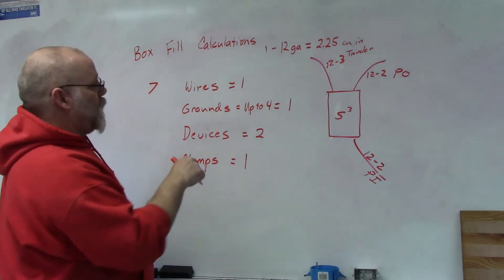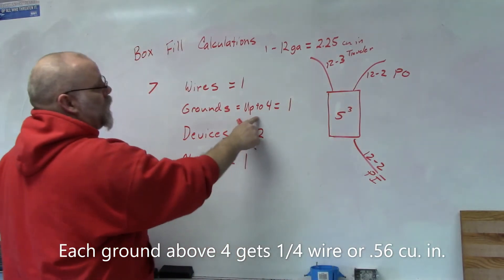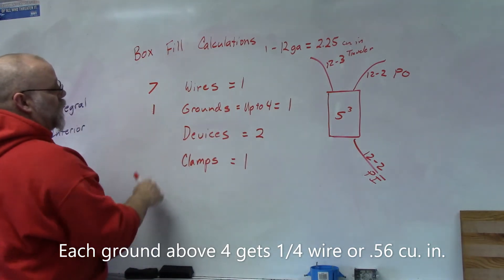Now we count the grounds. Up to four. So there's one ground, two, three grounds, but up to four I'm going to count one. So I got one.